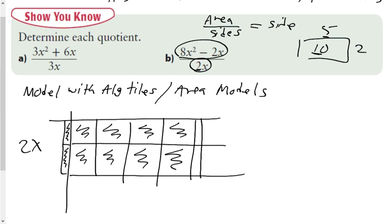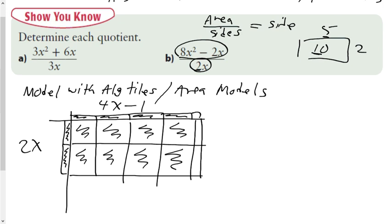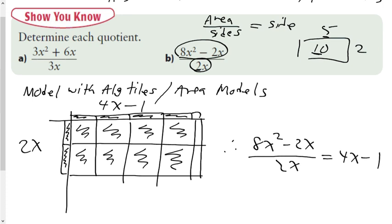But I still need the negative 2x part. If I put one straight line down and don't shade those in, I have my negative 2x. So the area represents 8x² − 2x, the side is 2x, and the missing side is x, x, x, x — and a minus 1. Therefore the missing side length is 4x − 1. So 8x² − 2x divided by 2x equals 4x − 1.